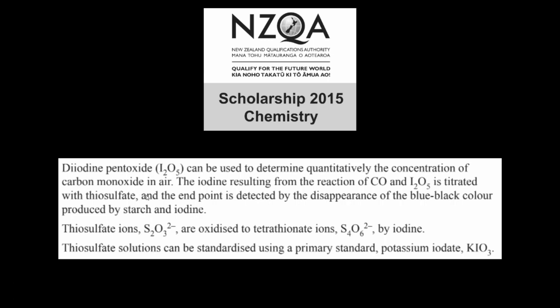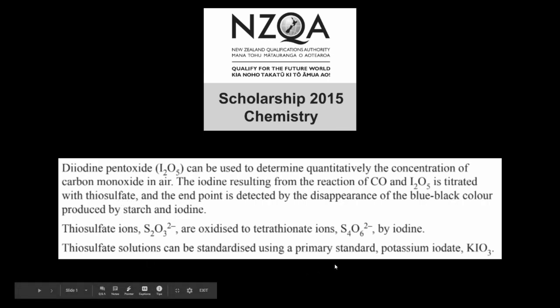In this first chemical reaction step, the carbon monoxide in the sample of air is reacted with diiodine pentoxide, and that produces a stoichiometric amount of iodine. The iodine goes on to be titrated against thiosulfate, and that thiosulfate involved in that titration goes on to be titrated against the potassium iodate, our standard solution.